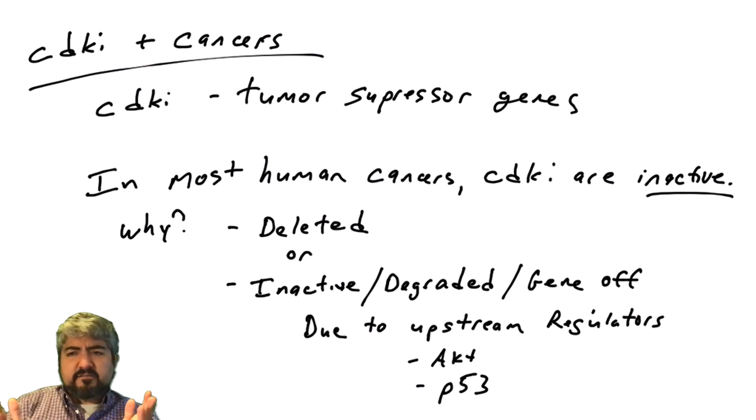So CDKIs are important regulators of the cell cycle and are often dysregulated in human cancers. So this was not an exhaustive list of all the ways that CDKIs are regulated, but they are some of the ways that CDKIs can be regulated.